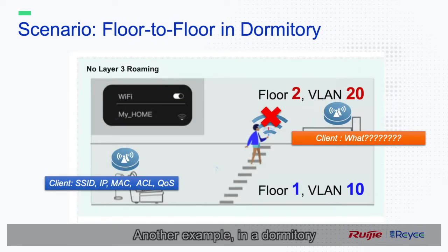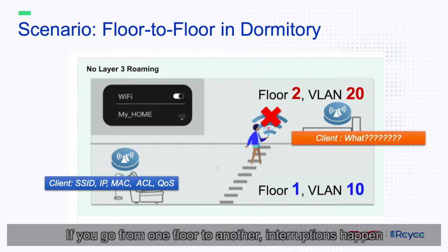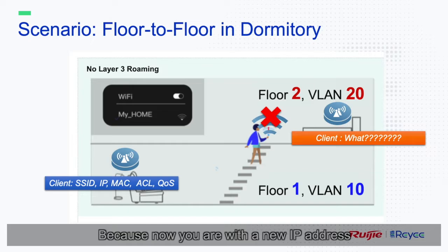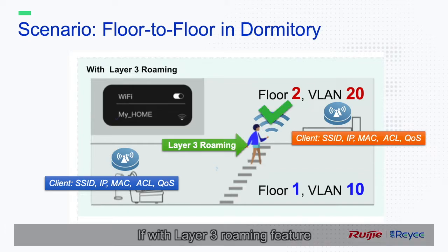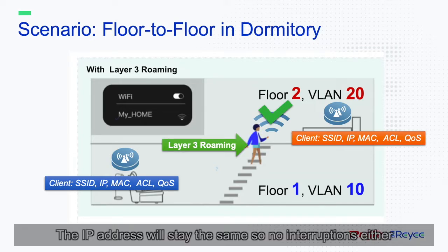Another example: in a dormitory, if you go from one floor to another, interruptions happen because you are assigned a new IP address. With the Layer 3 roaming feature, the IP address will stay the same, so no interruptions either.